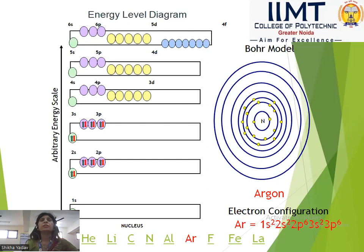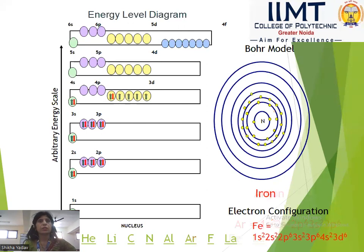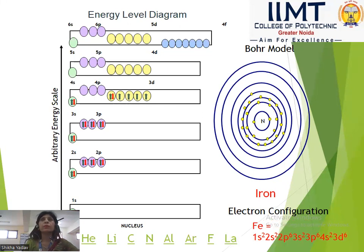Argon: 2 in the first shell, 8 in the second shell, 8 in the third shell. Next we have iron. Iron has atomic number 26 and symbol Fe. It is a d-block transition element. Looking at the periodic table, we see iron's location in the d-block.